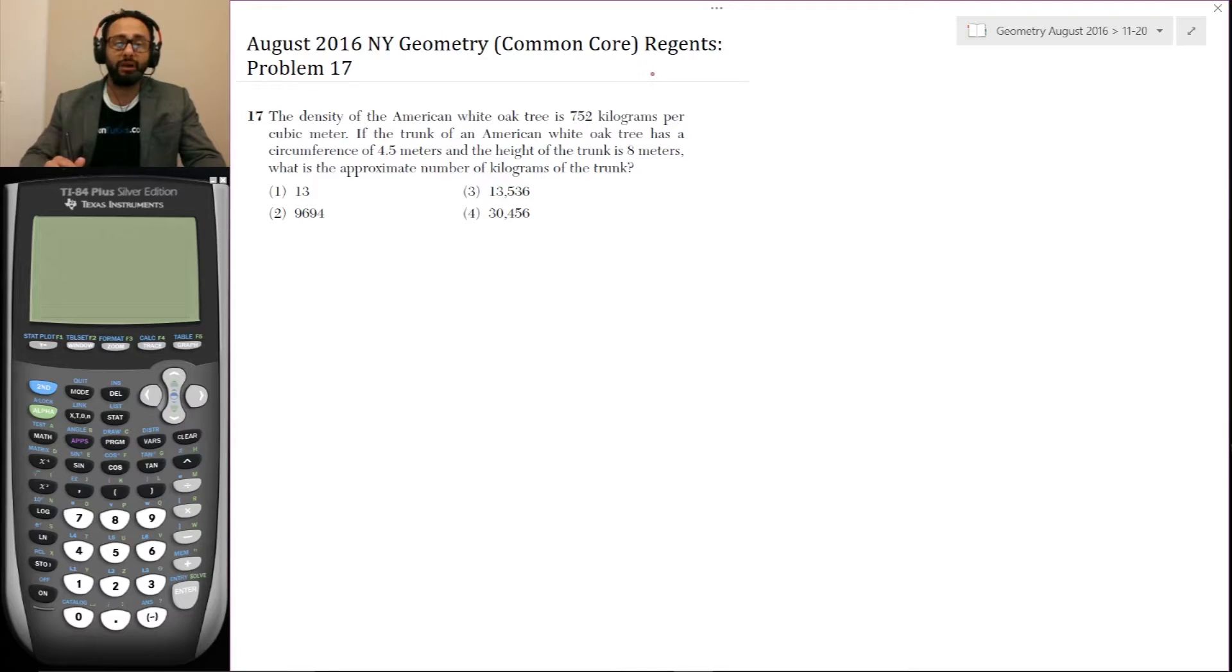So here's the problem. The density of the American white oak tree is 752 kilograms per cubic meter. If the trunk of the American white oak tree has a circumference of 4.5 meters and the height of the trunk is 8 meters, what are the approximate number of kilograms of the trunk?